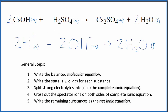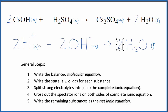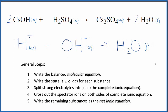You'll note charge is balanced. We have 2 times 1 plus, that's 2 plus. 2 times 1 minus, that's 2 minus. So this gives us a net charge of zero. The water is neutral — net charge of zero. The atoms are balanced as well. Because we have a 2 in front of each substance, we can reduce that down to 1 since these are the same, and we don't write the 1 by convention.